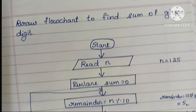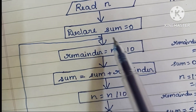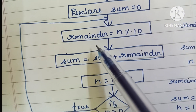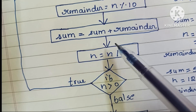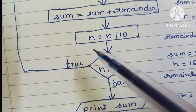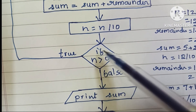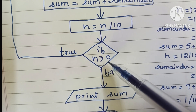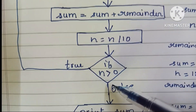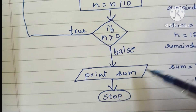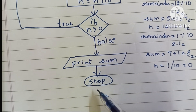So this is the flowchart to find the sum of digits of a given number. It starts with the start statement, then reads N, declares sum equal to 0, calculates remainder using N modulo 10, calculates sum using sum plus remainder, calculates N divided by 10, then checks if N is greater than 0 — using a diamond shape for comparison. If true, we loop back; if false, we print the sum and stop.